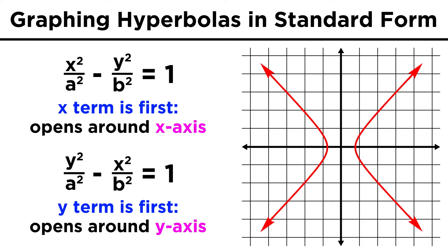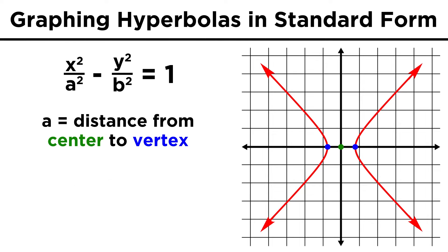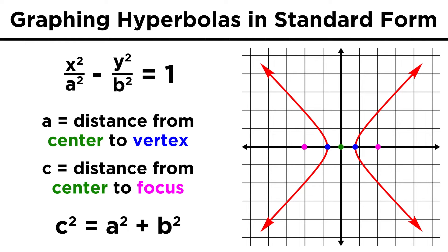The a, b, and c terms we know will mean pretty much the same things as well. A is the distance from the center to a vertex, and c is the distance from the center to a focus. One difference is that b no longer means much graphically, and we will just use it to solve for a or c, and this time the equation will be c squared equals a squared plus b squared.